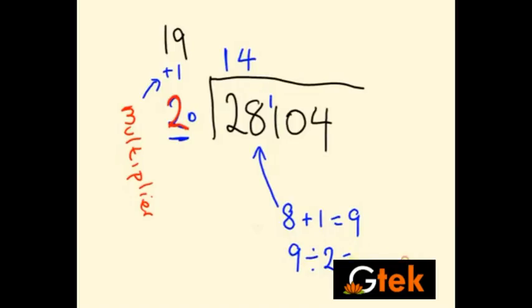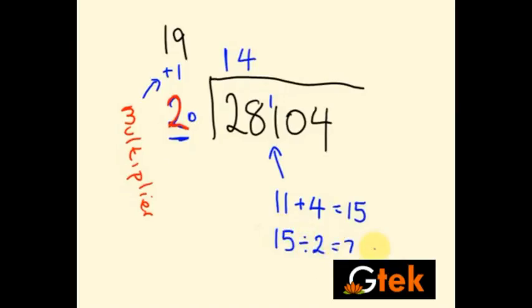Now my next digit is 11 actually. So since I had the carryover, my number is 11 now. Now this 11 plus my pre-quotient 4 into my multiplier 1 is 4. So 11 plus 4 is 15. 15 is not divisible by 2. So you will get one remainder. So 7 and your remainder 1 is added to the next digit. So now your next number is 10.